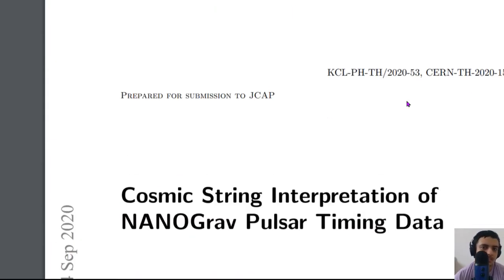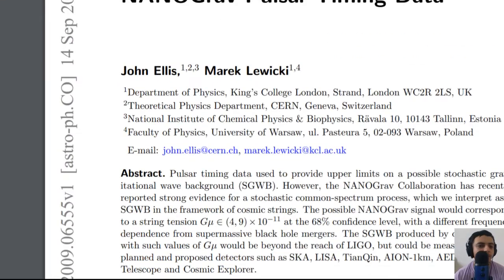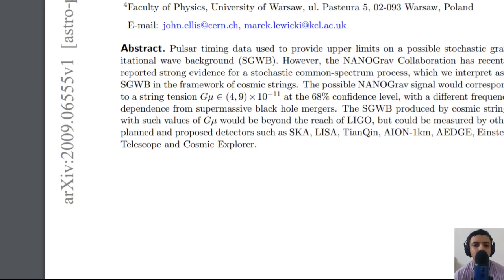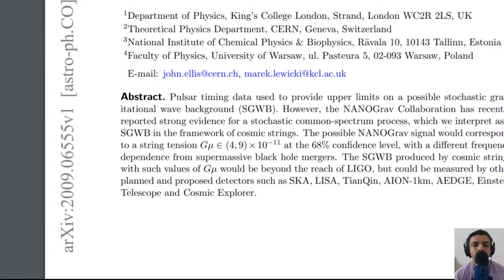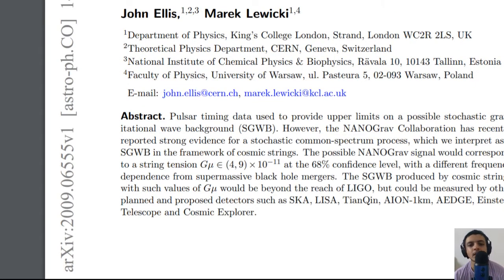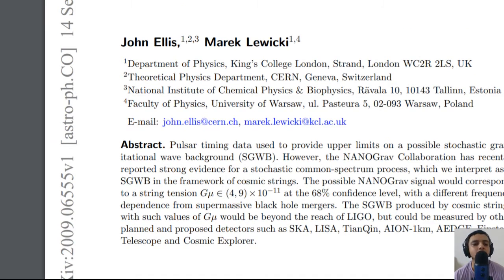A second paper published on the same day provides more information about the data set. Pulsar timing data provides an upper limit on a possible stochastic gravitational wave background, and the NANOGrav collaboration reported strong evidence for a stochastic common spectrum process, with string tension of 4.9 times 10 to the power minus 11 at 68 percent confidence, with different frequency dependence from supermassive black hole mergers.